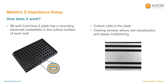Impedance-based cell analysis is a well-established technique for monitoring the presence and changes in morphology and behavior of cells in culture. The 96-well CytoView Z plate has a recording electrode embedded in the culture surface of each well. You can culture cells in the plate just as you would normally in a typical assay plate. Each well has a viewing window in the center for easy cell visualization and assay multiplexing.